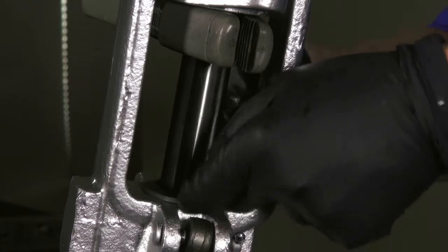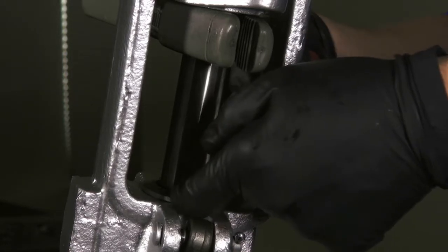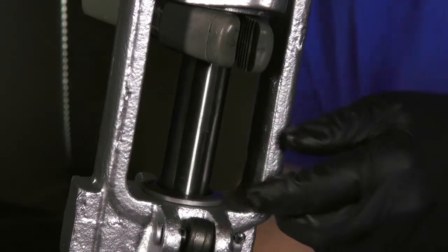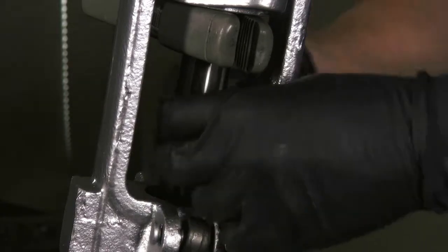You can also use a tamping tool to compress the individual packing rings. Once the ring is in the packing box, note where the split is in the ring, as you will stagger the splits in the rings 180 degrees.